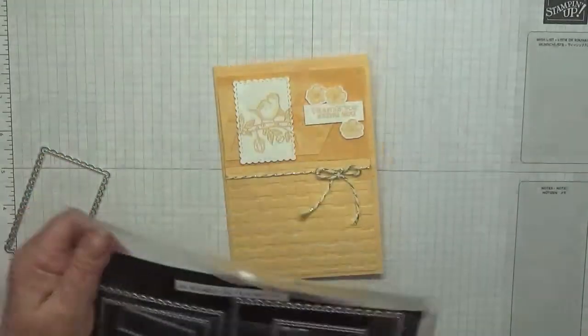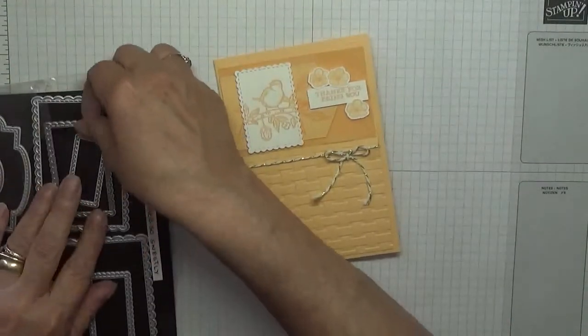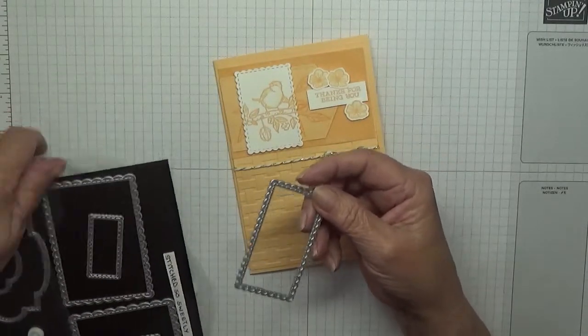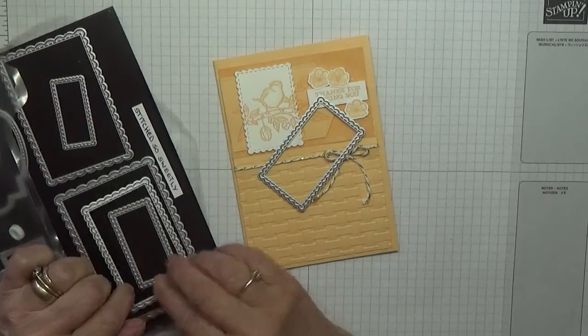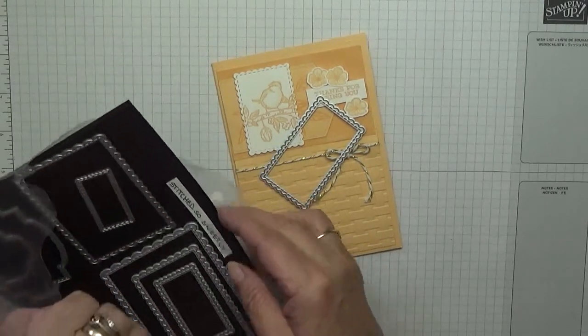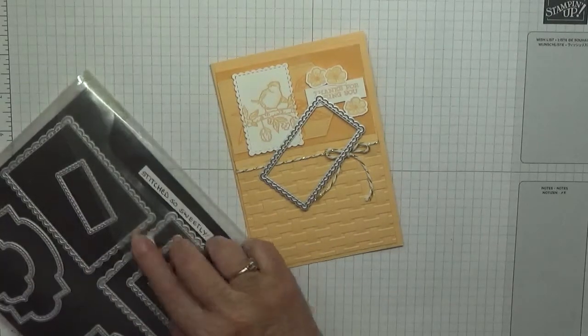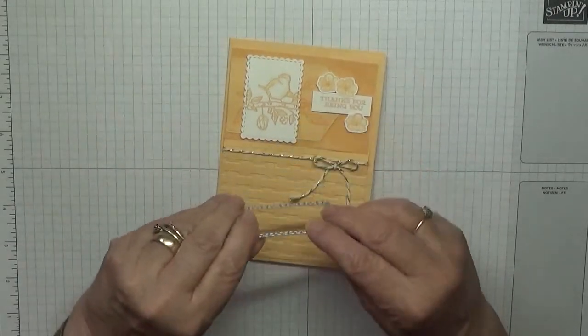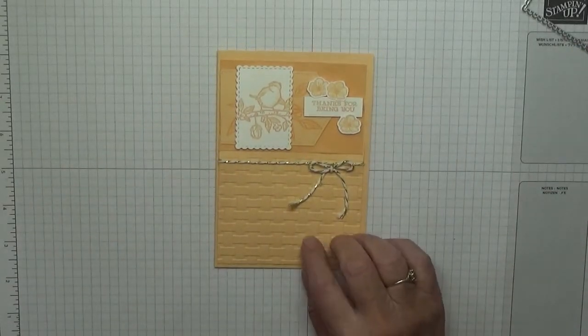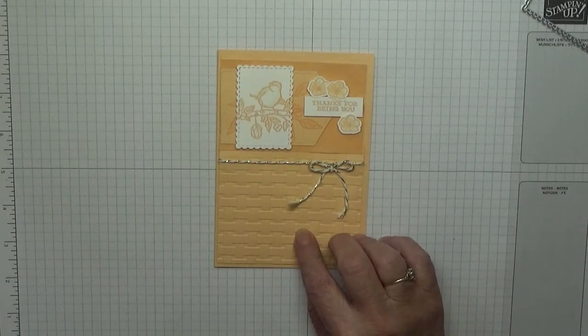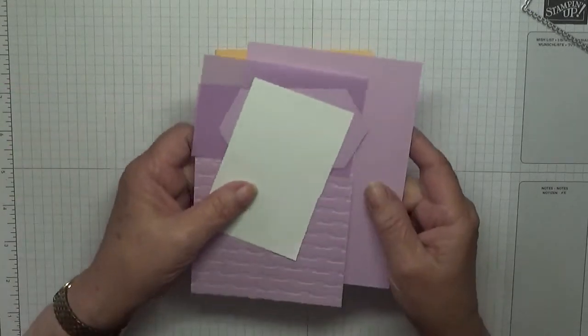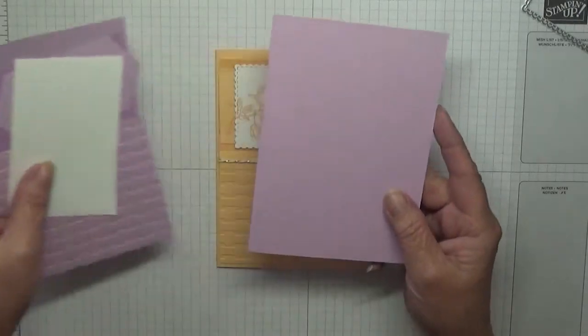I used Stitch So Sweetly, the third largest die. This is Pale Papaya, one of the new in colors, and this one is Fresh Freesia.